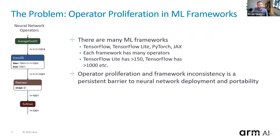The problem is operator proliferation in ML frameworks. There are many frameworks today — TensorFlow, TensorFlow Lite, PyTorch, JAX, etc. — and each has its own collection of operators used to construct neural networks. Based on new research and use cases, ML is evolving rapidly, giving rise to new network architectures and new operators. TensorFlow has over 1,000 operators today; TFLite has over 150. This growth is replicated across many frameworks.